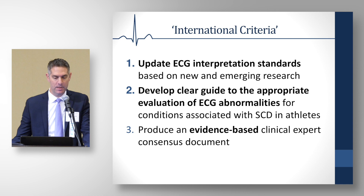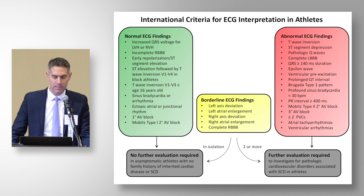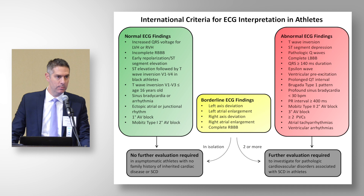Figure one in the international criteria documents for ECG interpretation in athletes uses a green, yellow, and red list — much like the revised criteria. Green represents normal findings, red represents clearly abnormal findings, and yellow represents borderline ECG findings.